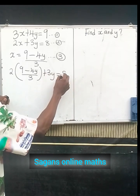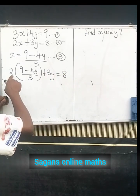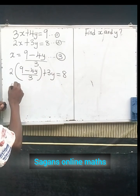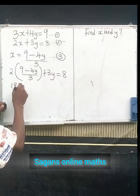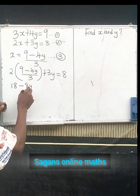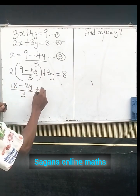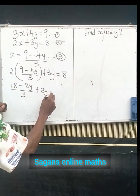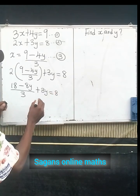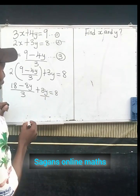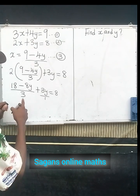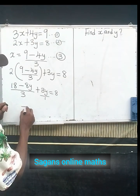Now let me open this parenthesis. 2 multiplied by 9 will give me 18. 2 times -4y will be -8y, all over the denominator which is 3, plus 3y equals to 8. Now you'll agree with me that there's an invisible 1 here. Let's take our LCM. The answer is 3.